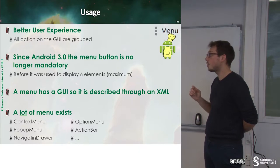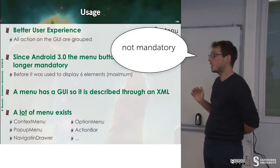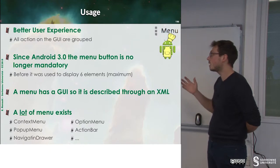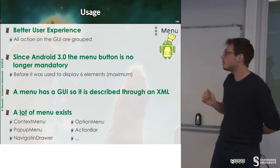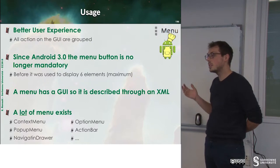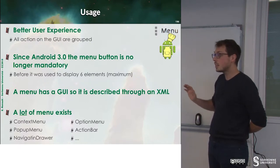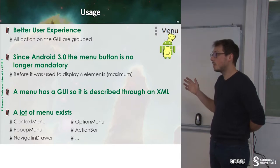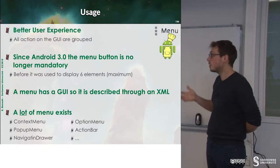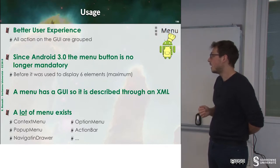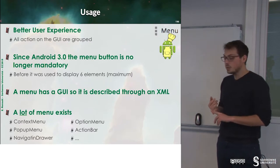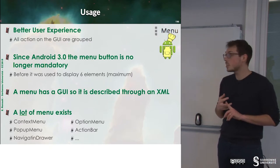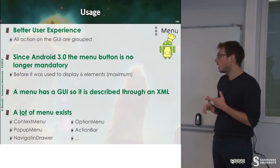Since Android 3.0, the menu button is not mandatory. This means that you may not have this button, so please don't provide menus for this button. Since every UI element is XML in Android, you have to define your menus through XML. There are a lot of menus in Android: context menu, pop-up menu, navigation drawer, action bar and option menu.